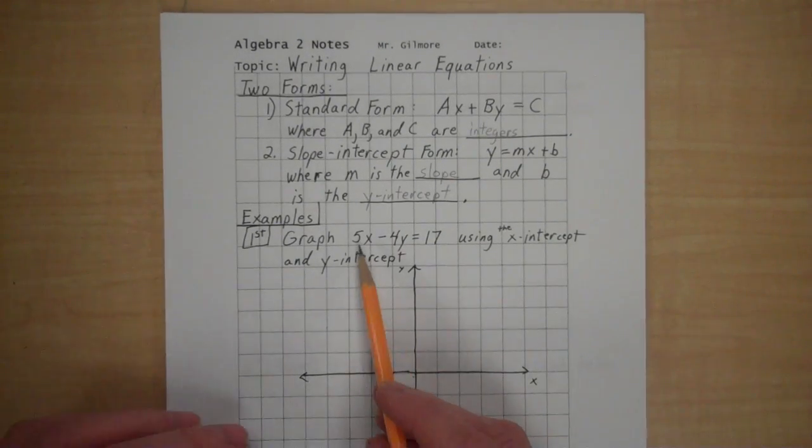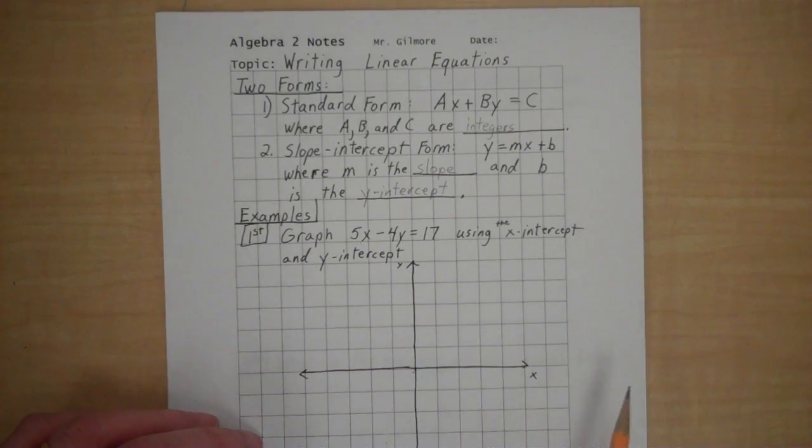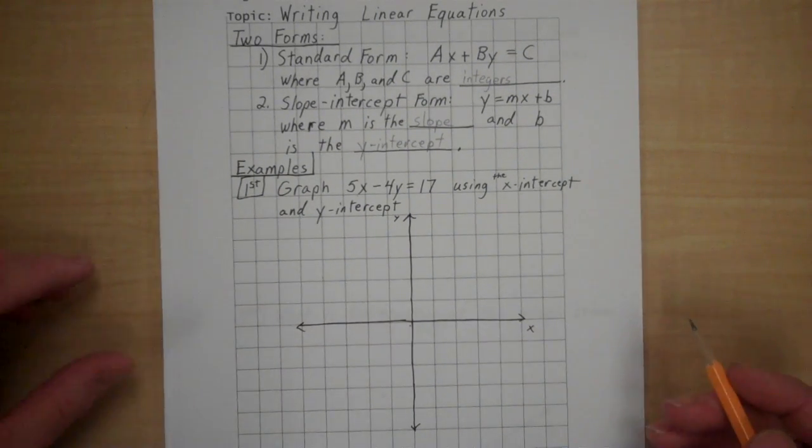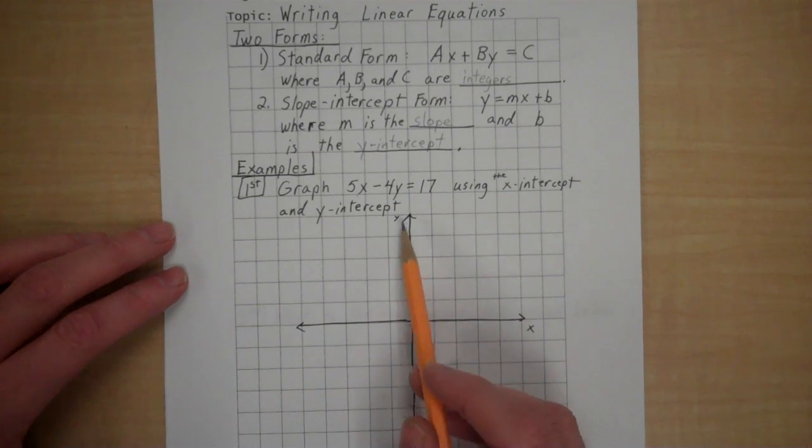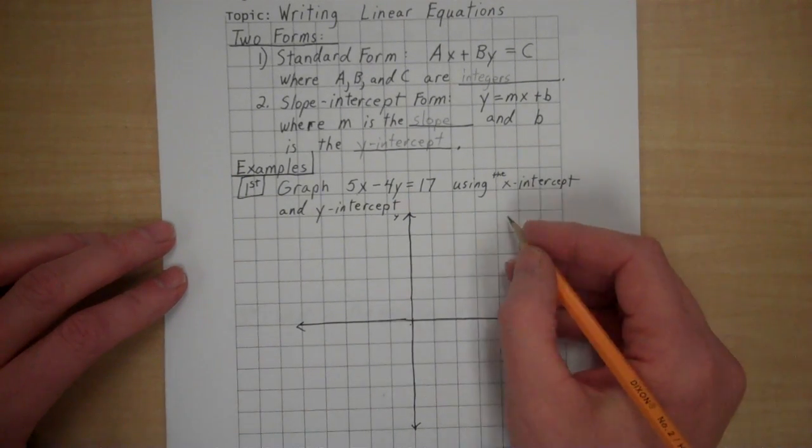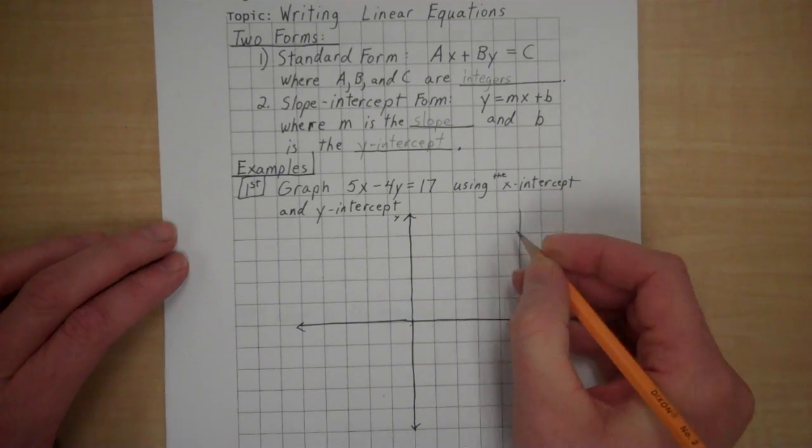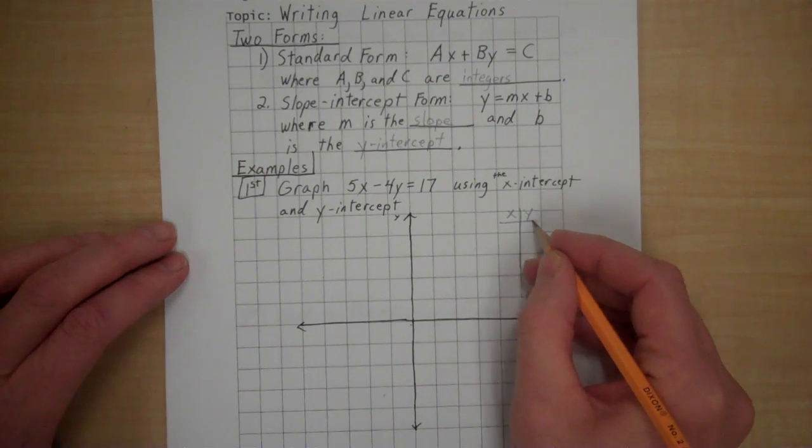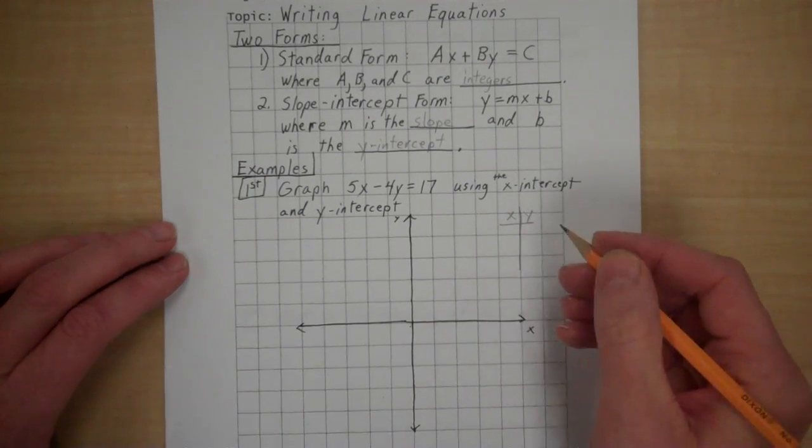Okay, let's deal with, this is an equation that is in standard form. 5x minus 4y equals 17. Now we're going to graph that equation using the x-intercept and the y-intercept. I like to set up a little table here. Here's x, here's y.